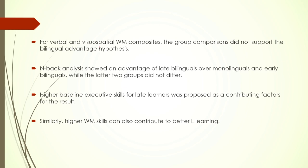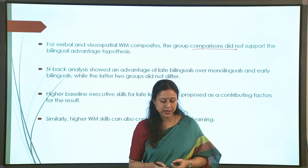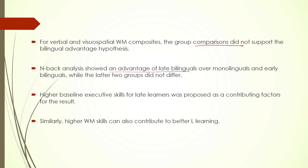What they found was that for verbal and visual composites, there was not much difference between monolinguals and bilinguals. However, N-back analysis showed an advantage of late bilinguals over monolinguals and early bilinguals - only late bilinguals showed an advantage in the N-back task. Higher baseline executive skills were also found for late learners, proposed as a contributing factor: those executive skills were already in place before they started learning the language, contributing to better language learning.